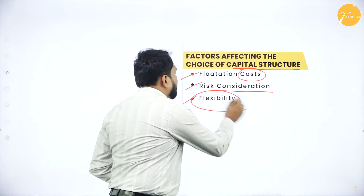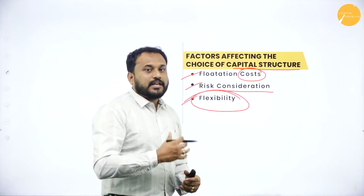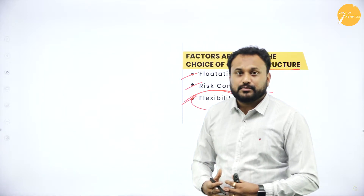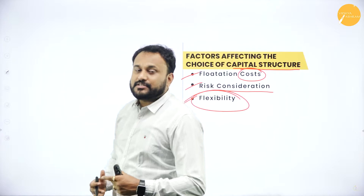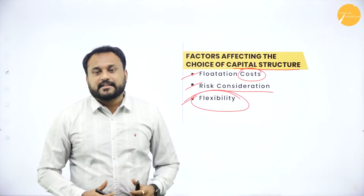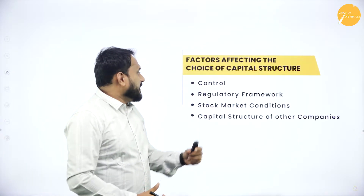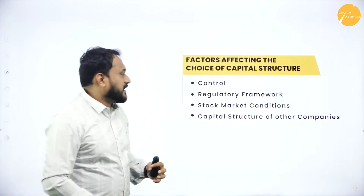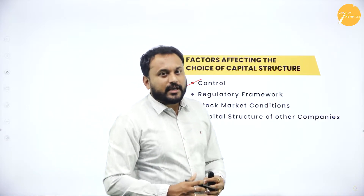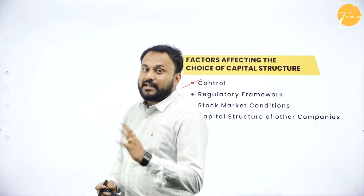Next you have flexibility. Only for these uncertainties and risk, you should always go with a capital structure which is flexible and feasible. When you understand this, then only the management can run smoothly and with ease. Next we have control. You are supposed to have total control over your debts and equity.